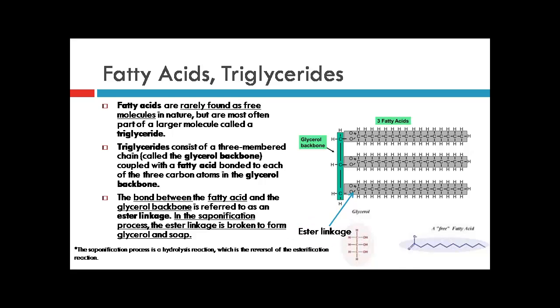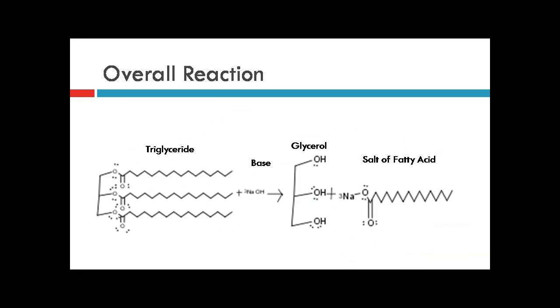The bond between the fatty acid and the glycerol backbone is referred to as an ester linkage. In the saponification process, the ester linkage is broken to form the glycerol and soap. Now we are going to go over the mechanism of the reaction. Here we see the overall reaction of the experiment. A triglyceride and a base react to form glycerol and a fatty acid salt.